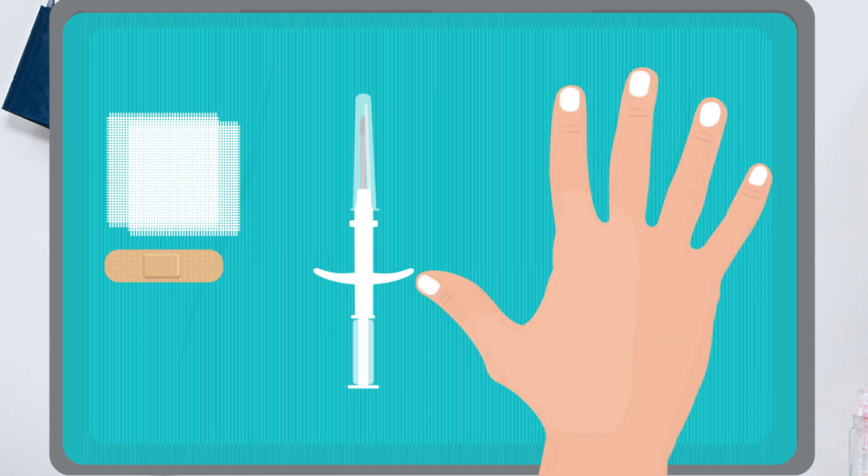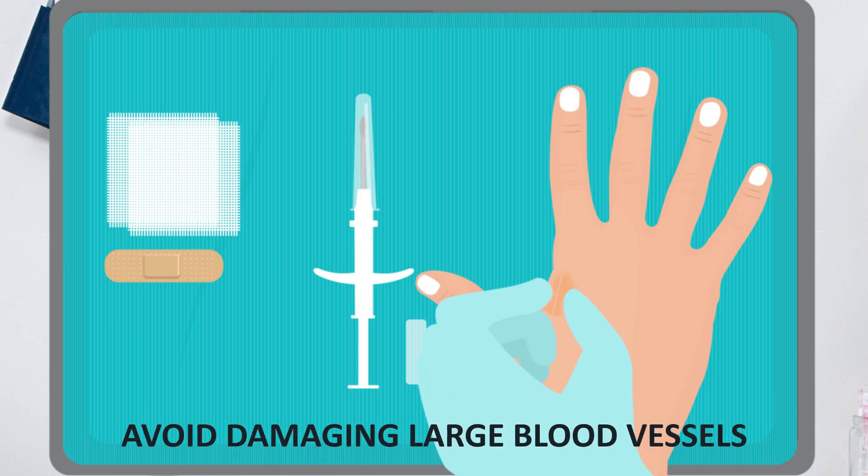As the prepared injection site dries, ensure the plunger safety is removed from the assembly. Palpate the skin to help loosen fascia tissue and get a feeling for subdermal vasculature. Tenting the skin while inserting the needle can help maintain proper depth and avoid damaging large blood vessels.